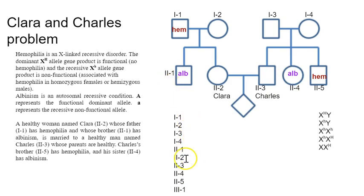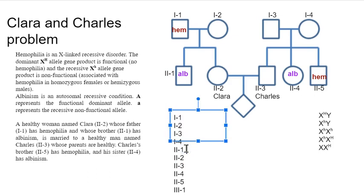So individual 2-1, which is here, is little a little a. And individual 2-4, which is here, is little a little a. So that's pretty straightforward.